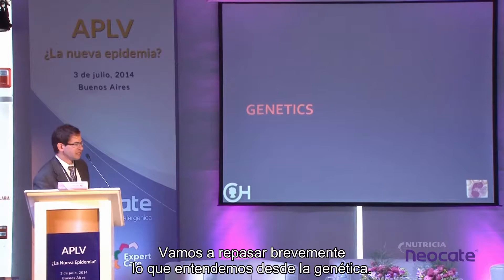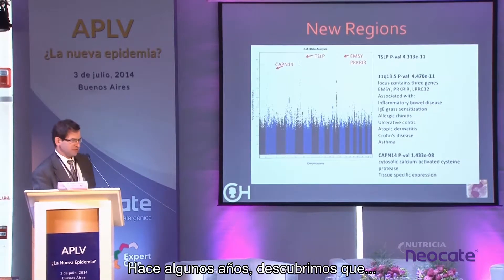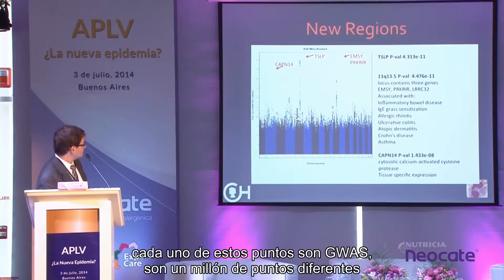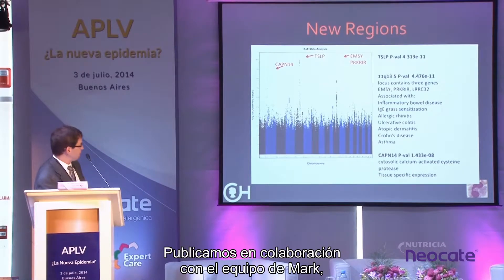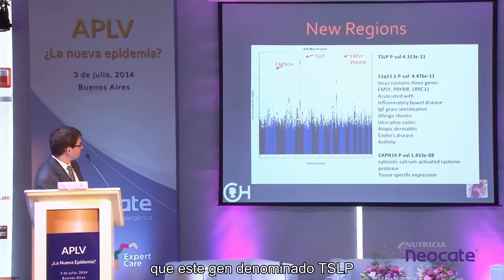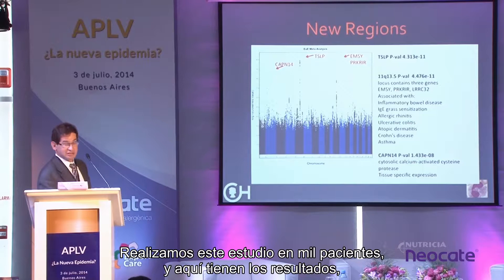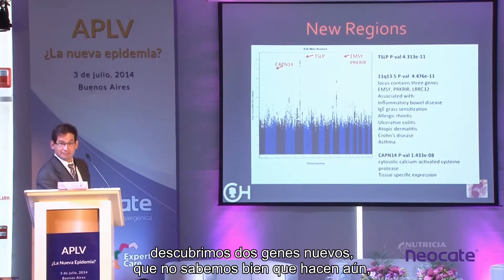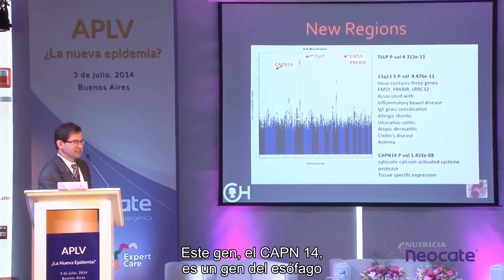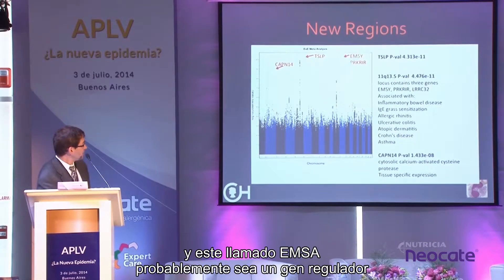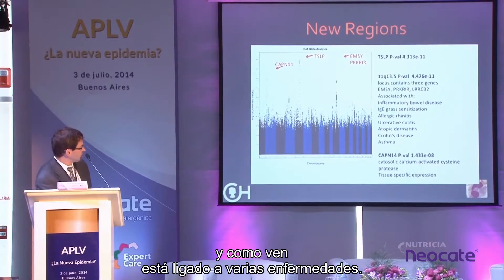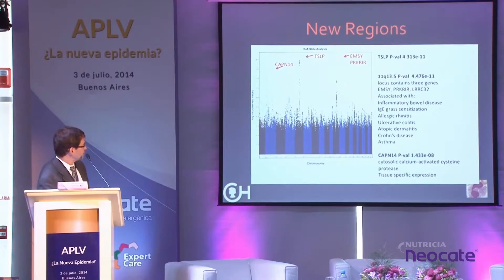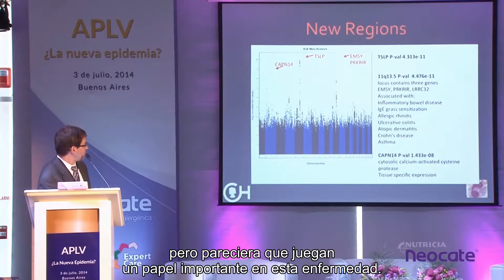On the genetic side, using a Manhattan plot from a GWAS of a million variants, we published in Nature — in collaboration with Mark Rothenberg's group — that the gene TSLP likely plays a key role. Expanding to a thousand patients, we identified two new genes: CAPN-14, an esophageal gene, and EMSA, probably a regulatory gene linked to T-cell regulation. These findings suggest these genes play a large role in disease.